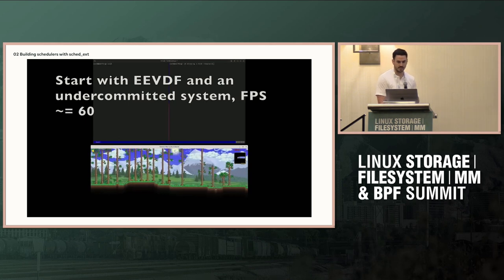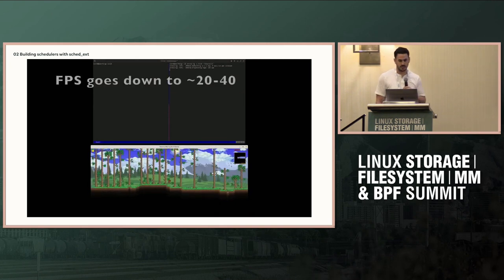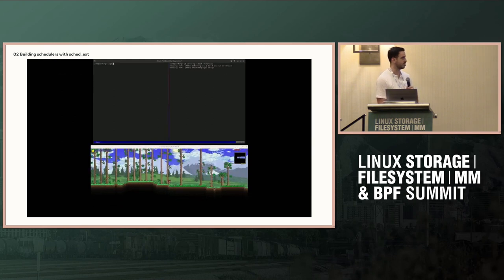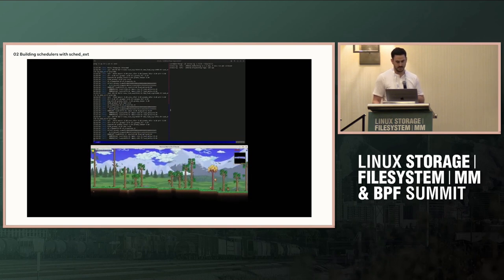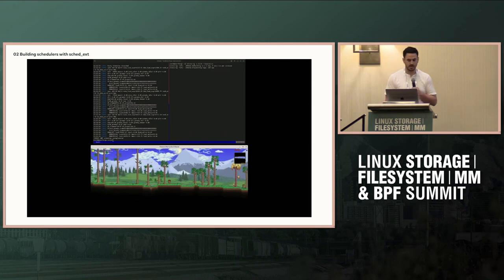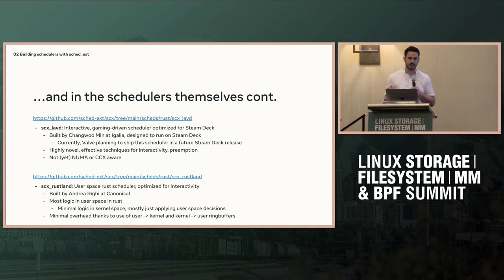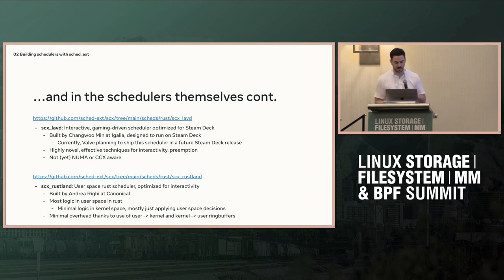Here's an example using Terraria. If we throw a ton of CPU at the system — again 4x nproc — with EEVDF it's completely unplayable, the whole system becomes totally unusable. But if you start Rusty, you would have no idea that there's a ton of work happening in the background. And just to show it still happens, if you turn it off, the system again becomes pretty unresponsive. I should note this was tested on 6.8, so it might be different on 6.9 based on how eligibility was changed. But it works really well. Rusty also does better for throughput because it's work conserving — you can still get better kernel compile times depending on the workload.